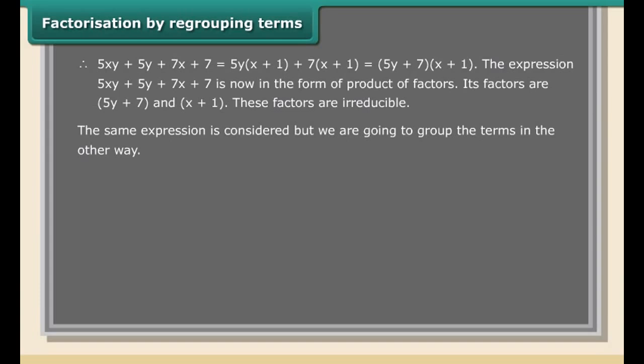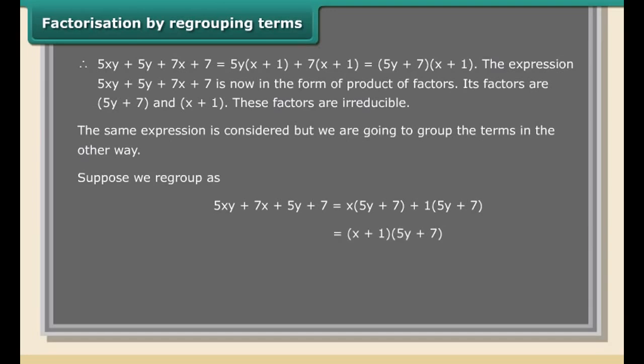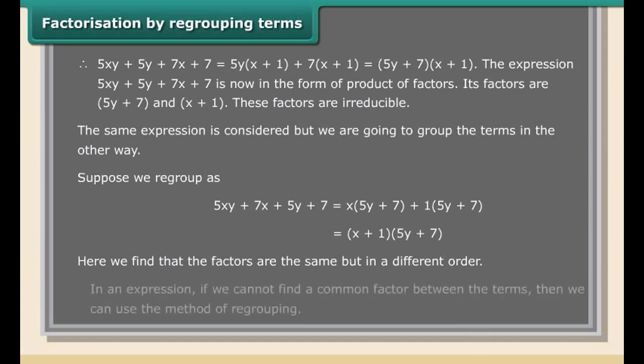The same expression can also be grouped differently: 5xy + 7x + 5y + 7 = x(5y + 7) + 1(5y + 7) = (x + 1)(5y + 7). Here we find that the factors are the same but in different order. If we cannot find a common factor between all terms in an expression, we can use the method of regrouping.